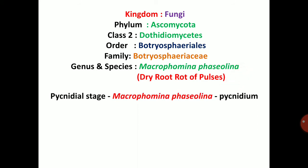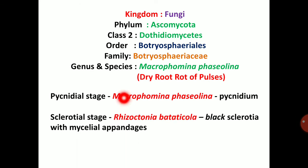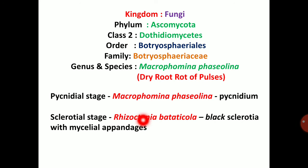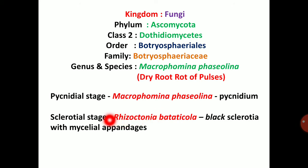There are two stages. The first one is the pycnidial stage — Macrophomina fasciolina produces pycnidia, and this is the asexual reproduction or asexual stage. The second is the sclerotial stage — Rhizoctonia bataticola produces black sclerotia with mycelial appendages, which is known as the resting stage or resting structure.